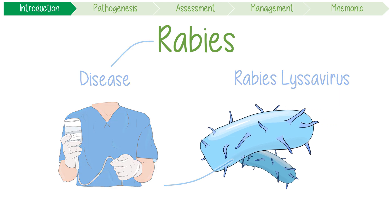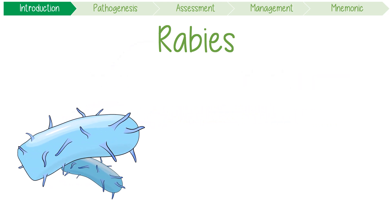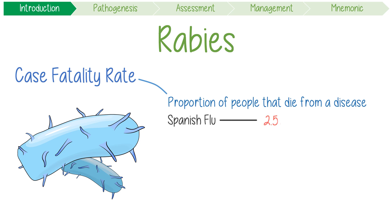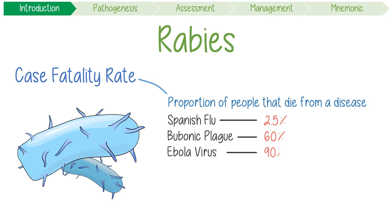The reason this infection is so famous is because it has the highest case fatality rate of any human infectious disease. This term refers to the proportion of people that die from a certain disease. To give some context, the 1918 Spanish flu had a case fatality rate of about two and a half percent, untreated bubonic plague sits at about 60%, and Ebola virus is as high as 90%.